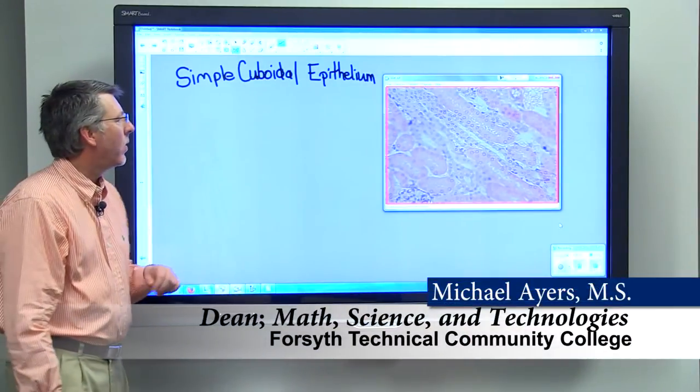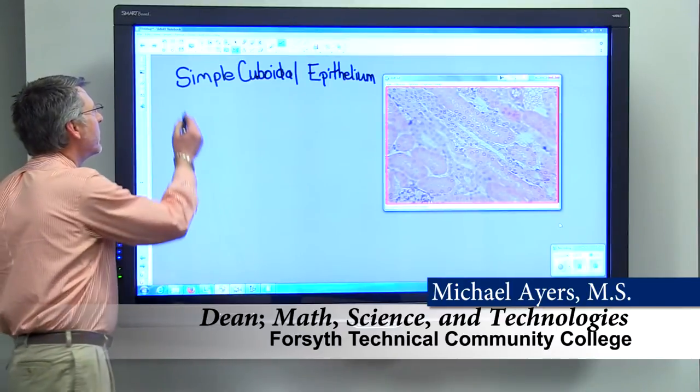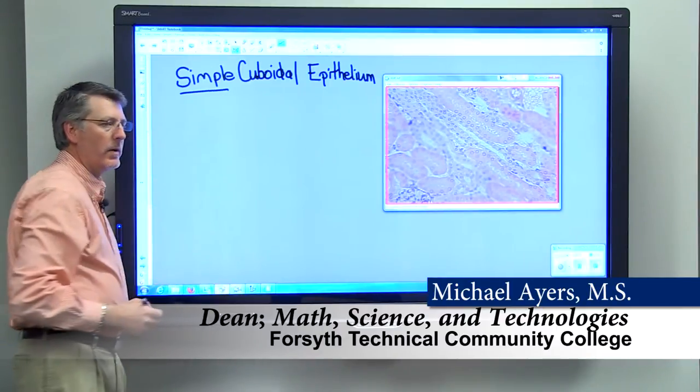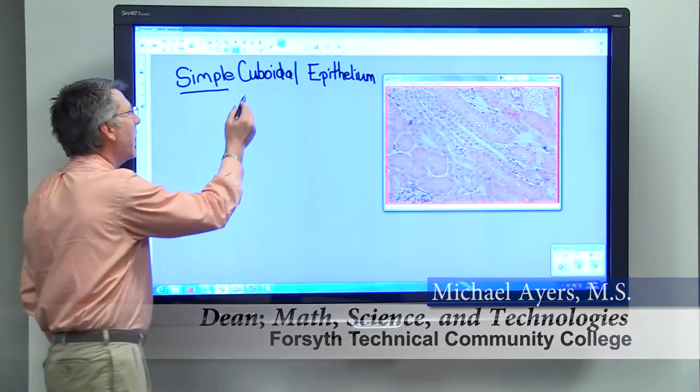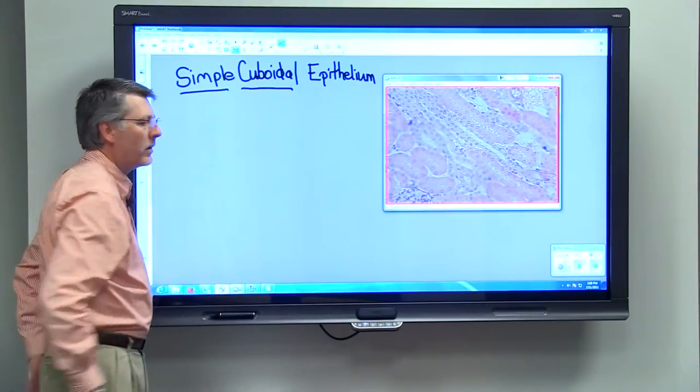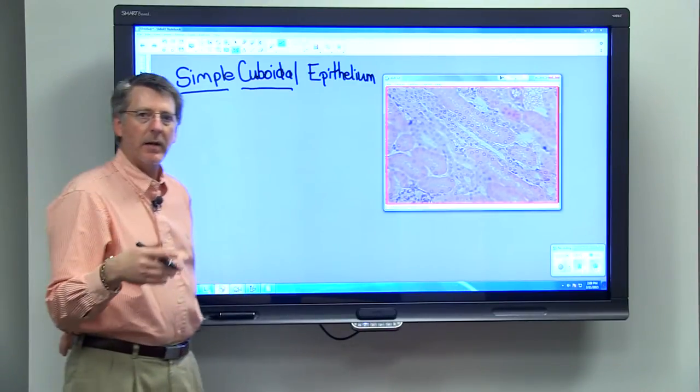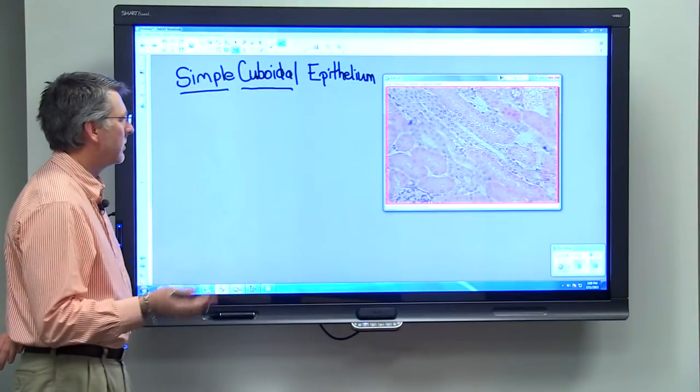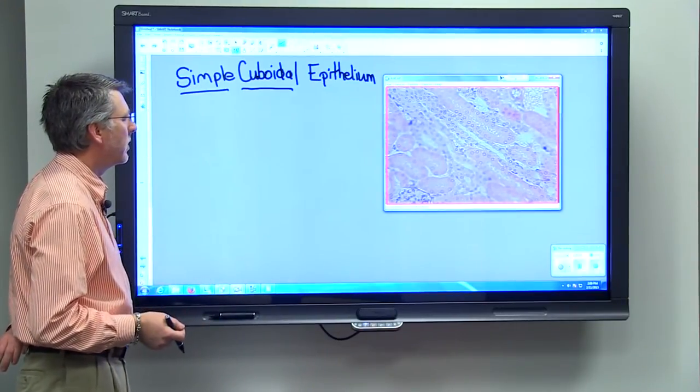So let's think about simple cuboidal epithelium. The term simple means that it's only one cell layer deep, and we've talked about cuboidal, meaning that we have cube-shaped cells like a pair of dice, each one of those would be a cube.